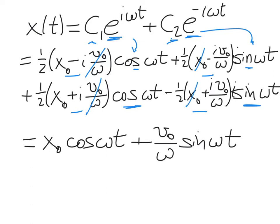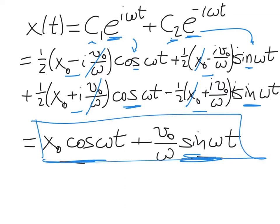What we end up with is the clean solution: x(t) = x₀·cos(ωt) + (v₀/ω)·sin(ωt). You can verify: at t=0, the sine term is zero and we just get x₀. Taking the time derivative, only the second term survives at t=0, giving v₀. This is how you actually solve for c1 and c2 in terms of your initial conditions.